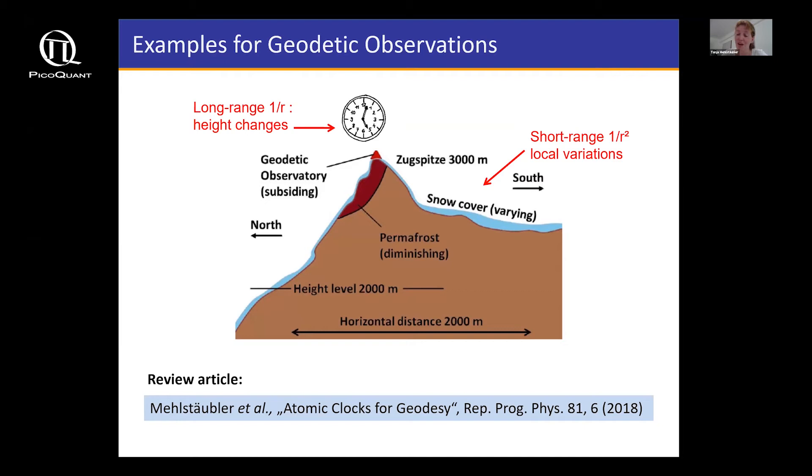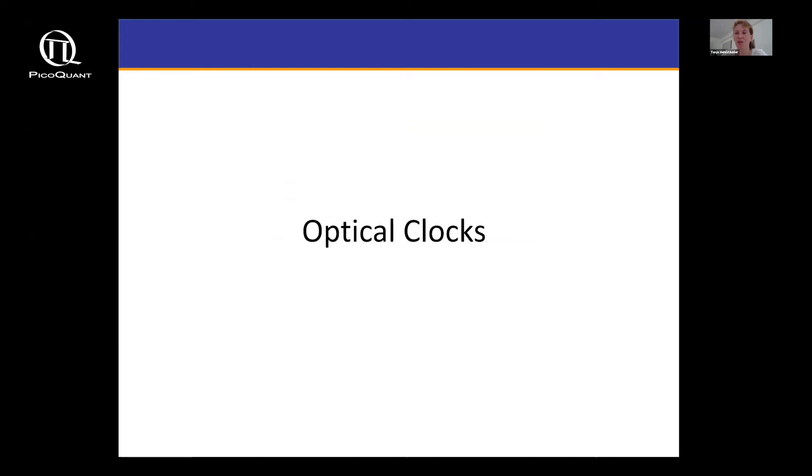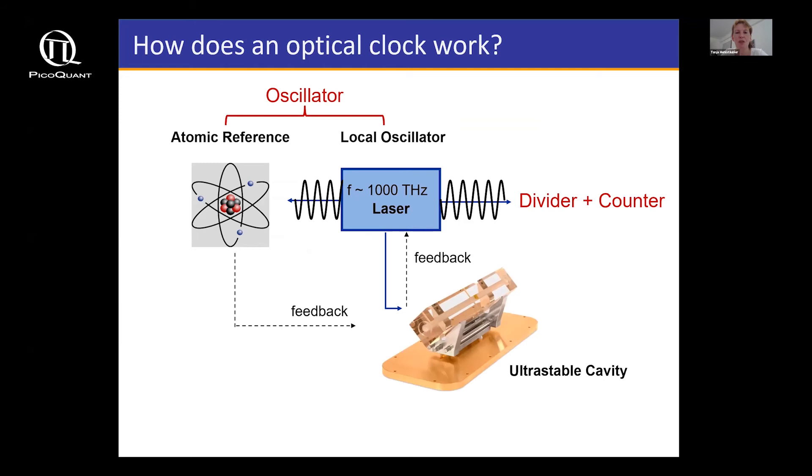If you're interested in this, I refer to this review to get some deeper knowledge. I hope that motivated you a little bit why it's not completely insane to always improve the performance of clocks. 10 to minus 18 is actually something that you can use even in everyday life. Now I would like to explain how we do this. How does an optical clock work? I was always speaking about this black box, the clock, but what is it?